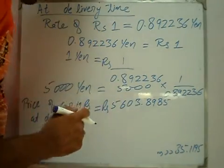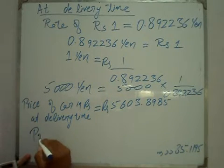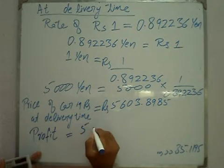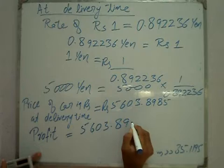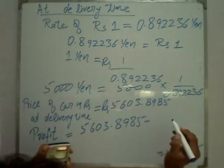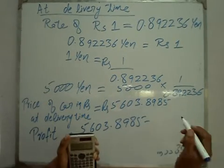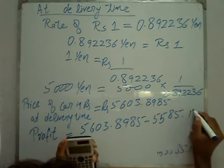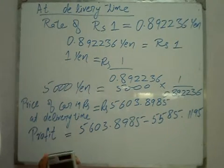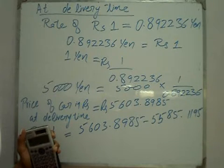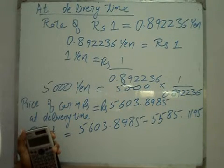We have to find how much profit. The calculation is: delivery time value minus contract time value. Delivery time value: Rs. 5603.8985. Contract time value: Rs. 5585.1195. So, 5603.8985 minus 5585.1195.